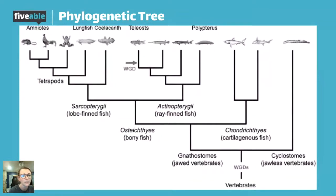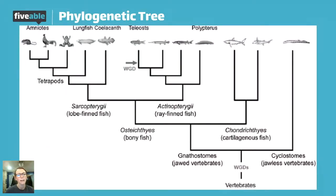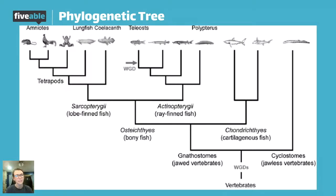If you look all the way to the left of the page, you see amniotes. We have a chicken and a mouse, and they have the most recent connecting branch to one another. If you look at where they intersect, that intersection point is closest to the top of the paper. If this is a continuum of time, that means they have the most recent common ancestor, so they are most closely related.